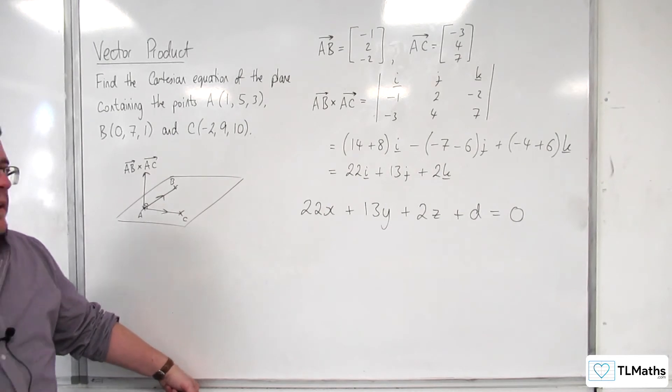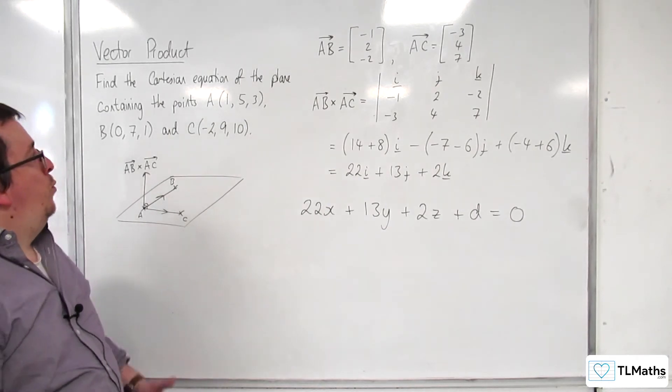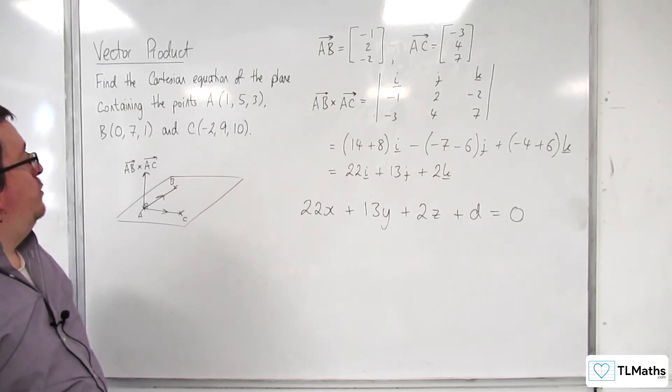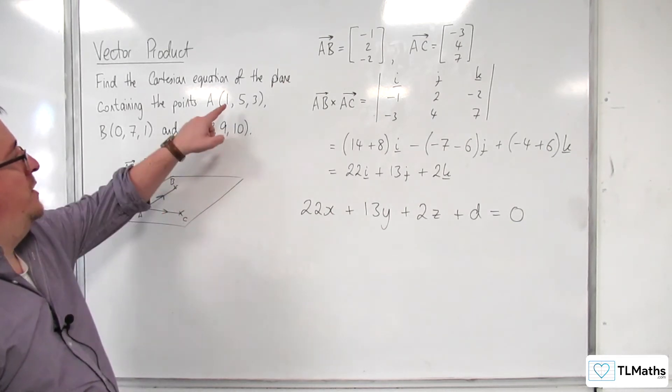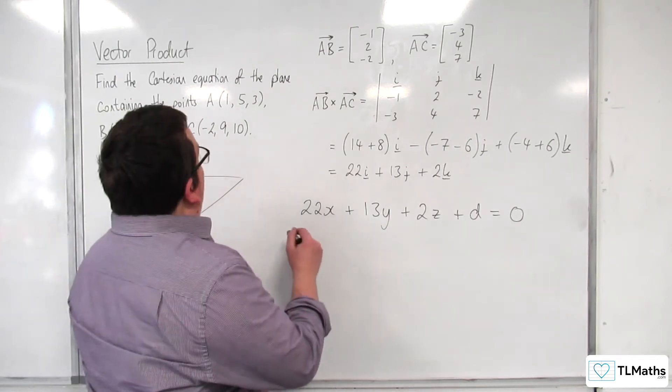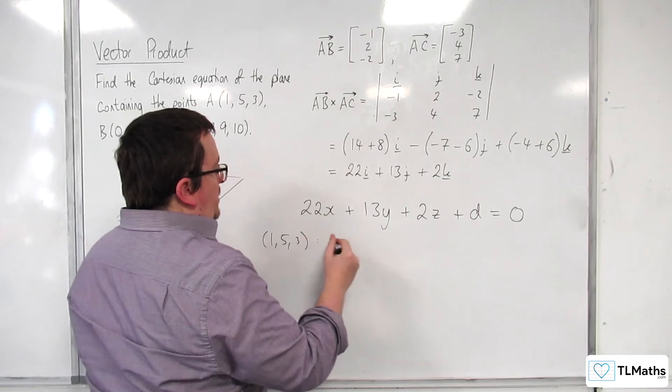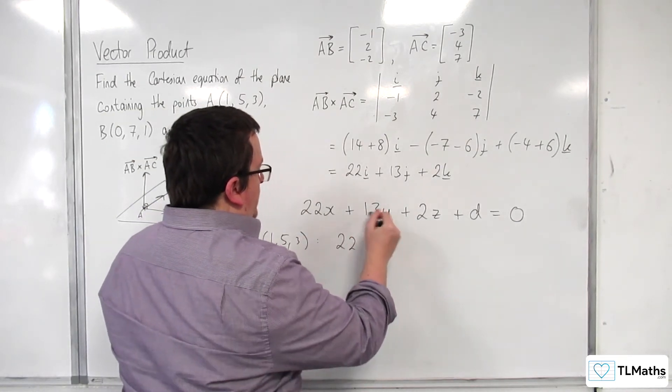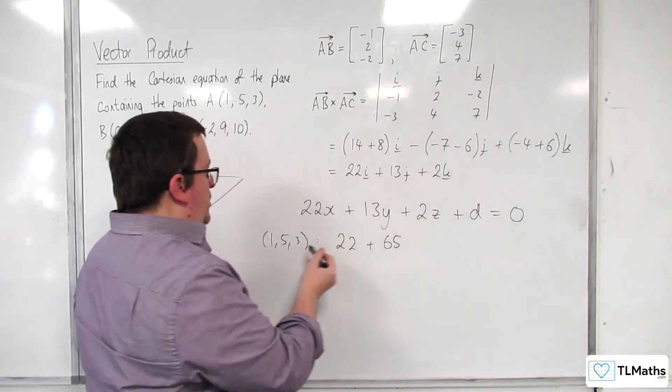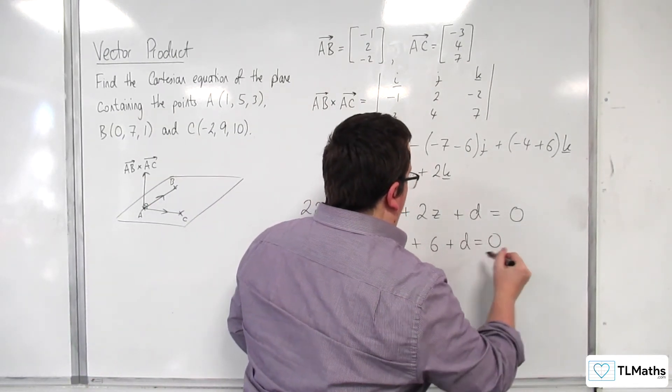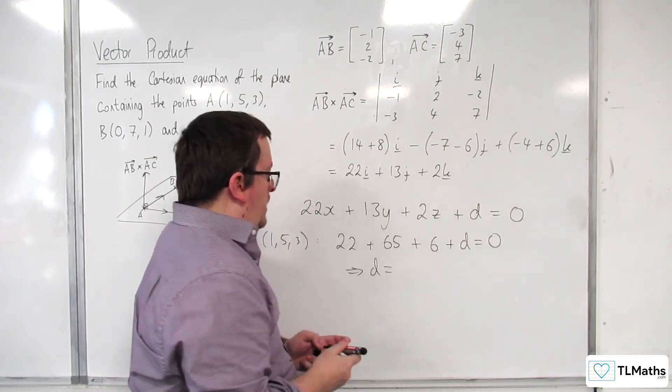So I can work out D by just substituting in one of the coordinates that I know is on the plane. So probably the easiest one to substitute in would be A. So I'll substitute 1, 5, 3 in. Let's see what we get. 22 lots of 1 is 22, 13 lots of 5 is 65, 2 lots of 3 is 6, plus D is equal to 0.